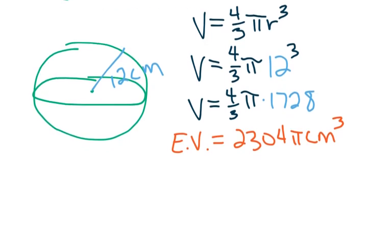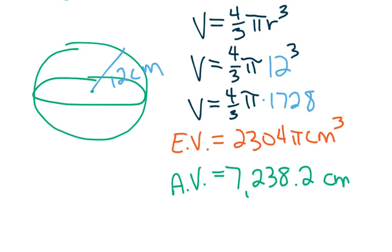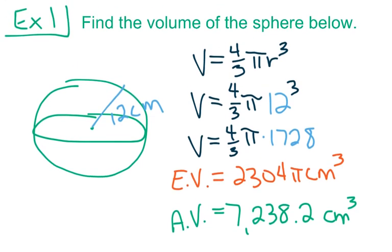For the approximate volume, we take 2,304 and multiply it by the pi button on our calculator, which gives us an approximate volume of 7,238.2 centimeters cubed. So inside every men's NBA basketball, there are 7,238.2 cubic centimeters of air. The exact volume is 2,304 pi centimeters cubed.